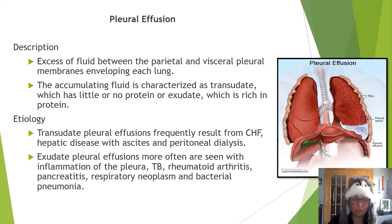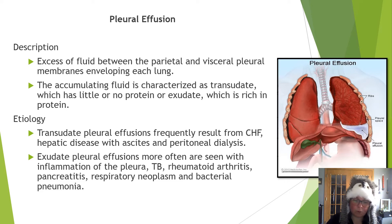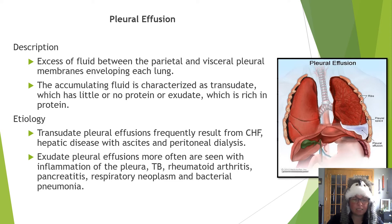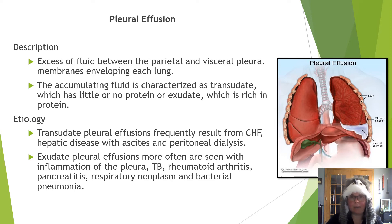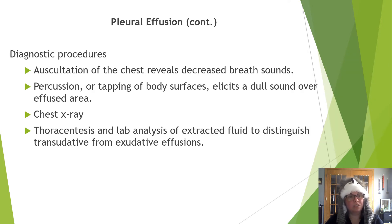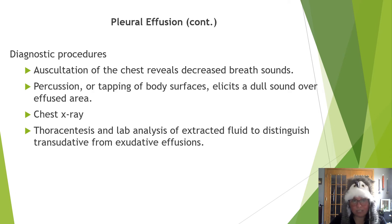Pleural effusion — excess fluid between the parietal and visceral pleural membranes enveloping each lung, which should not be there. The accumulating fluid can be transudate, meaning it has little or no protein, or exudate, which is full of protein. Transudate pleural effusions frequently result from CHF, hepatic diseases with ascites, and peritoneal dialysis. Exudate pleural effusions are more commonly seen with pleural inflammation, TB, rheumatoid arthritis, pancreatitis, respiratory neoplasm, and bacterial pneumonia. A chest x-ray and lab analysis of extracted fluid determines if the effusion is transudate or exudate — we're looking at proteins.